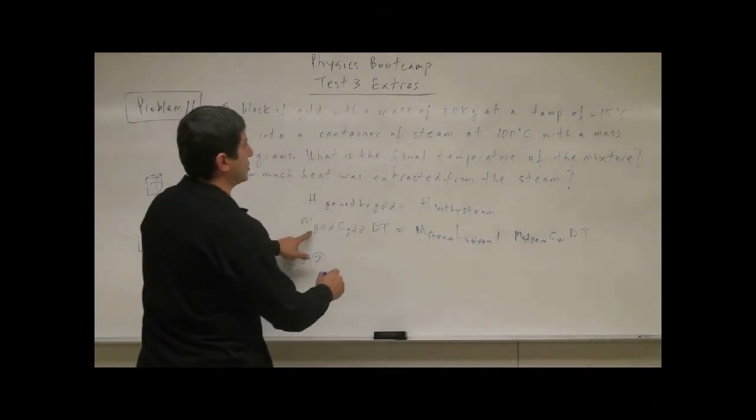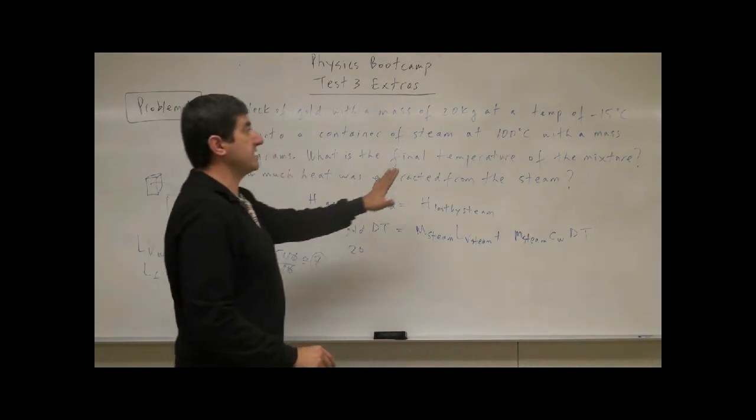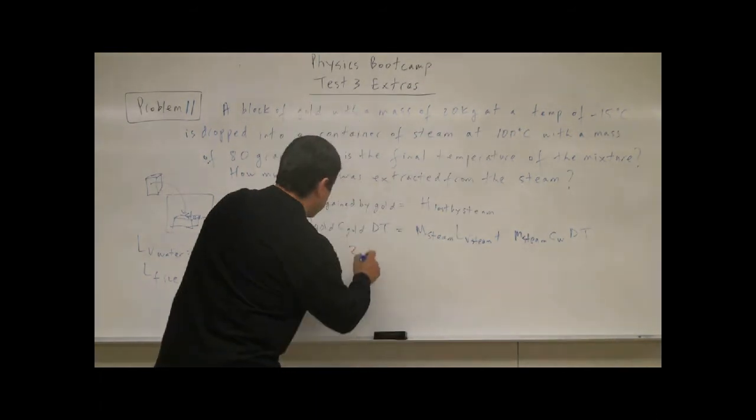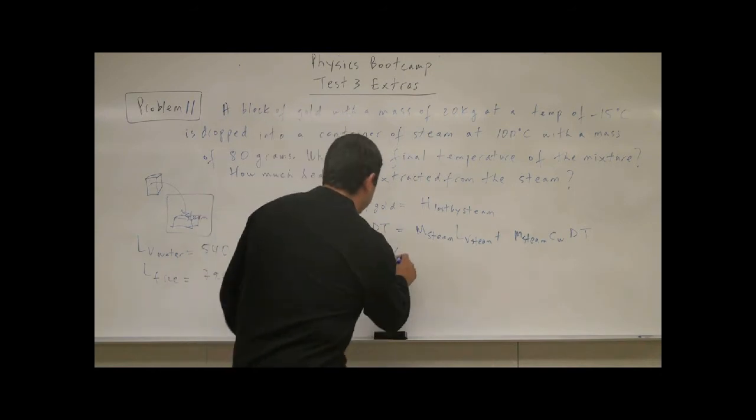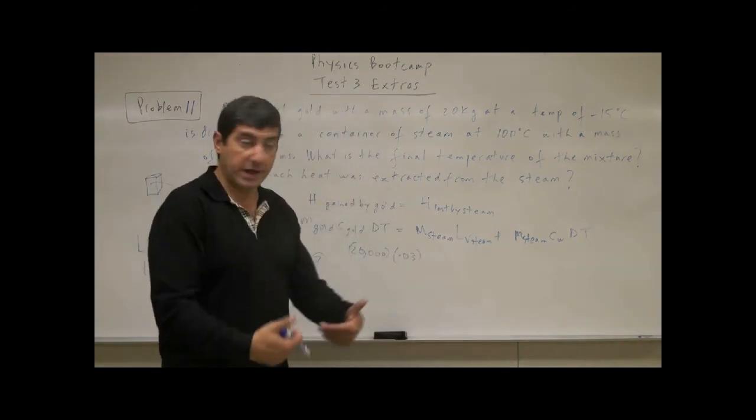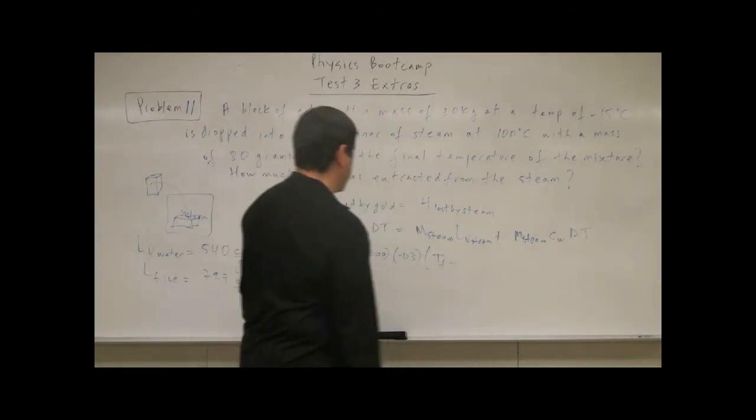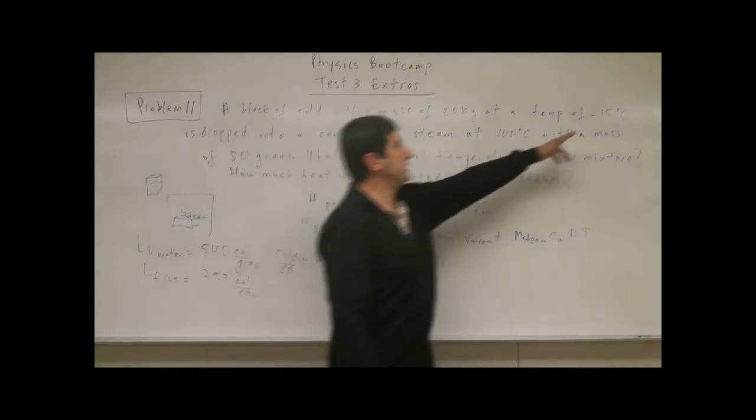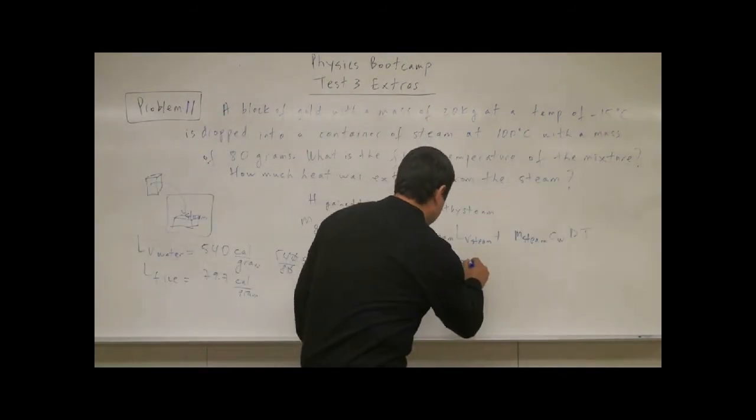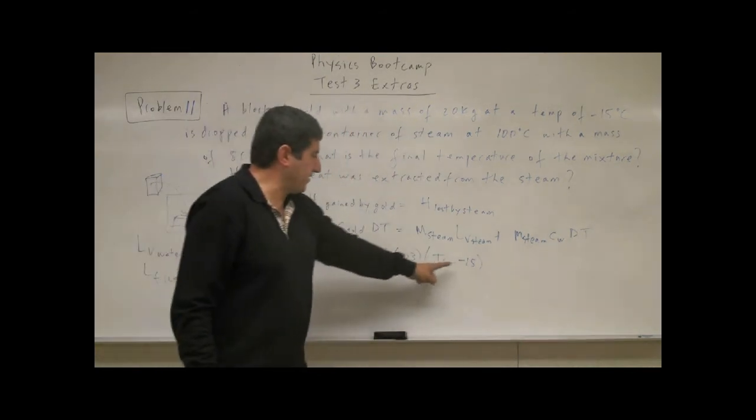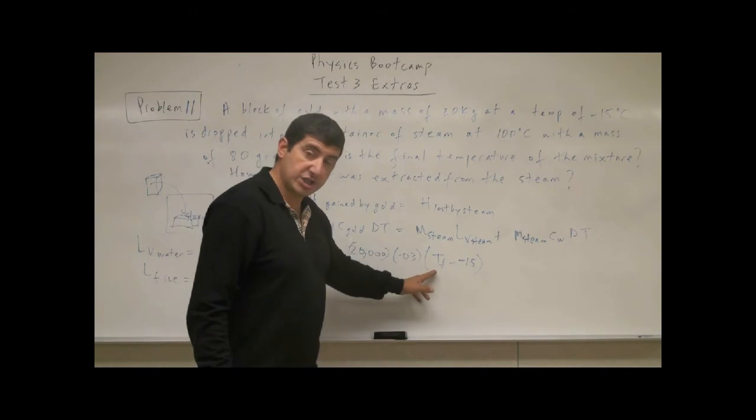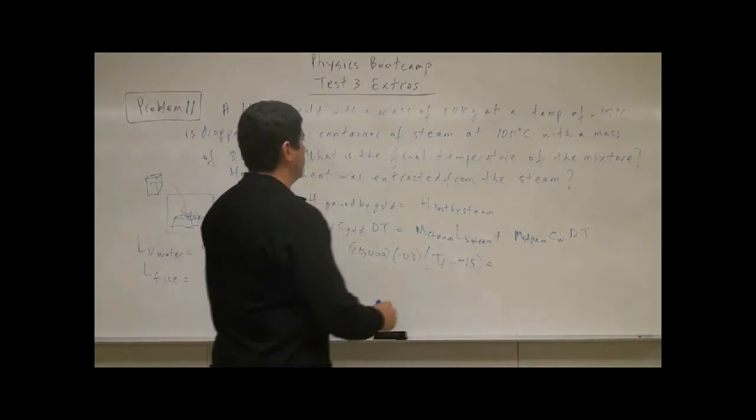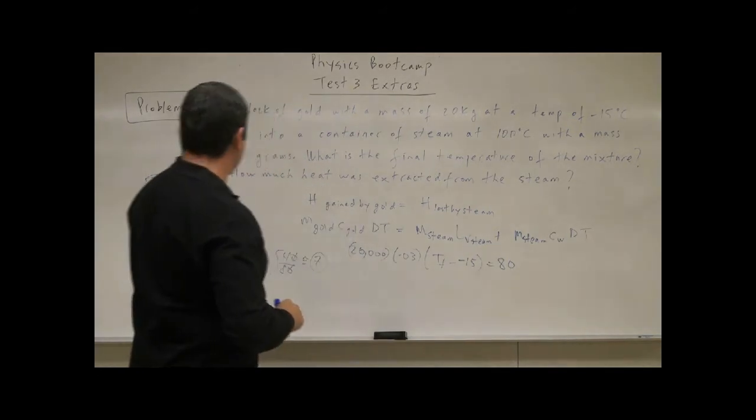So we have the mass of the gold, which is 20. Since everything is in grams, let's change this to grams. 20 kg is 20,000 grams, so we're going to make it 20,000. The specific heat of gold is 0.03 calories per gram. Change in temperature: Tf minus what? Now notice here you have Tf is the final temperature minus the initial temperature, which is negative 15. So we're going to put negative 15. That's something that someone might forget. You need to have change in temperature: Tf minus negative 15.